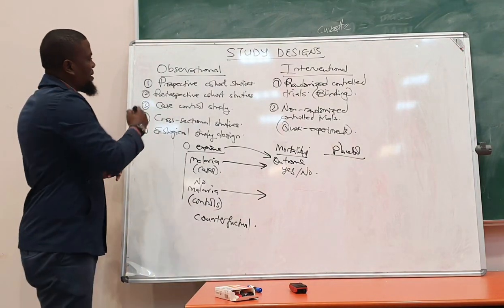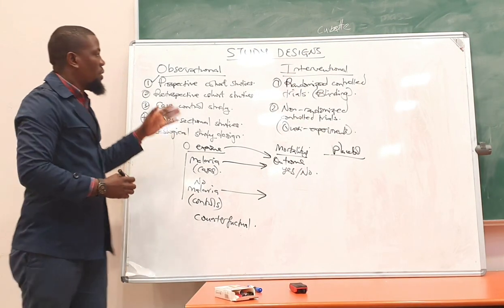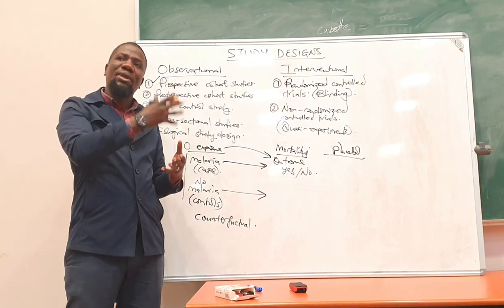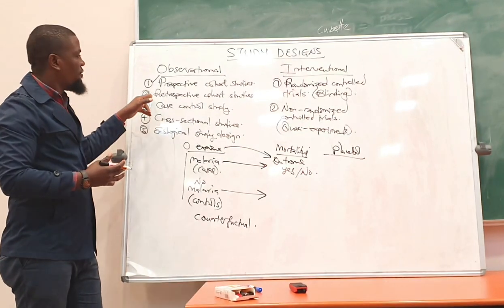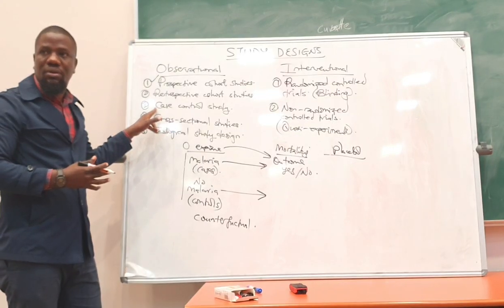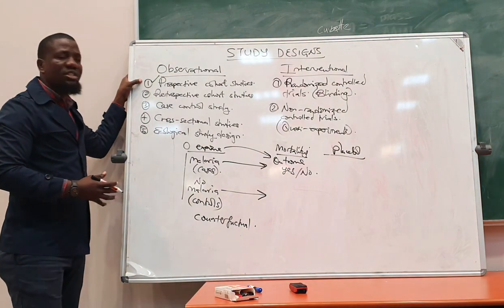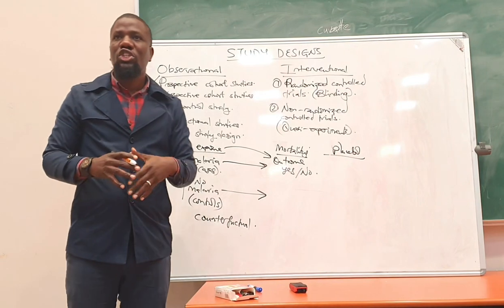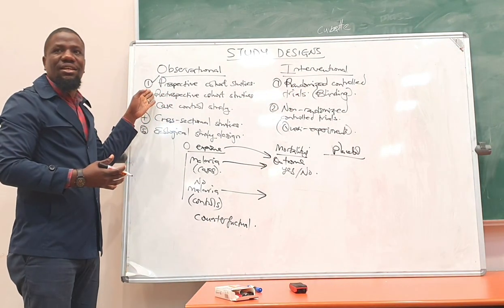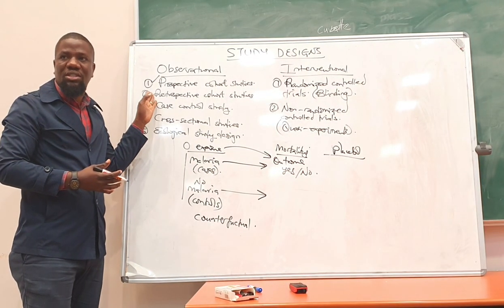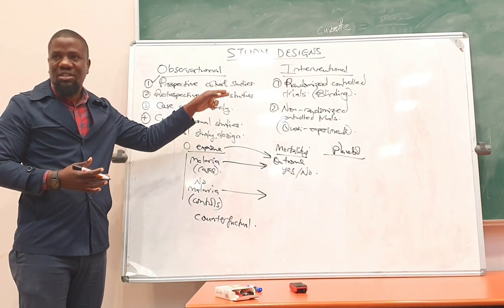Now, if the prospective cohort is clear, let me introduce the retrospective cohort. Retrospective refers to going back in time, and this is the design most confused with the case-control study. In a retrospective cohort, you typically use data that was already collected. You take that existing data, start from a point where participants had your exposure of interest, and follow them up for a period of time to see whether they ended up with the outcome of interest.